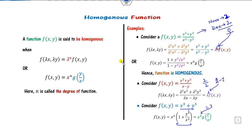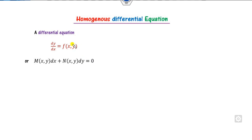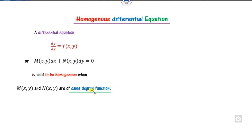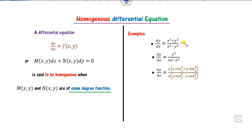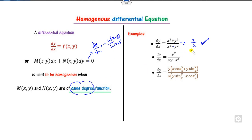Once you define that f(x, y) is homogeneous when either property is satisfied, a differential equation is said to be homogeneous when M and N are of the same degree. You can write dy/dx = −M/N. If M and N both have the same degree, then only it is homogeneous — remember that.